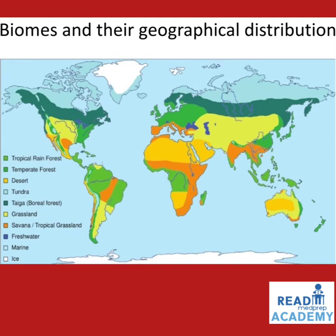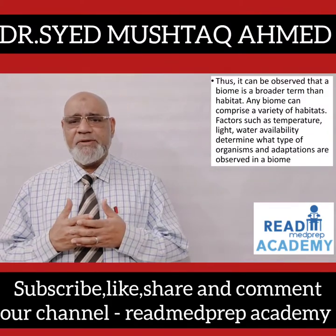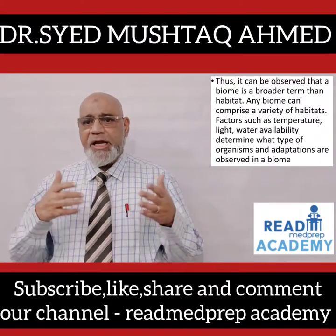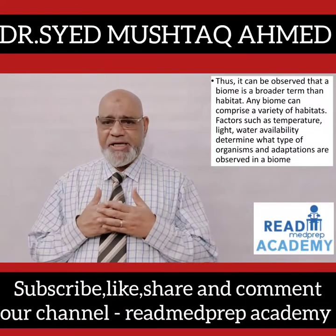the temperate forest, the deserts, the tundra, the taiga or the boreal forest, grasslands, savannah, tropical grassland, freshwater, marine water and ice. It can be observed that a biome is a broader term than habitat. Any biome can comprise a variety of habitats.